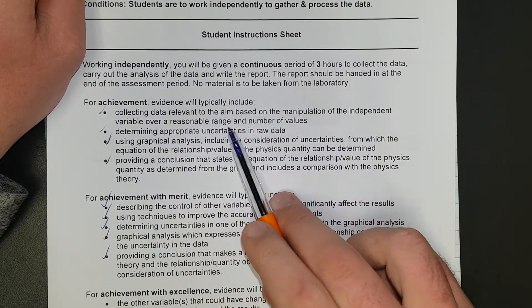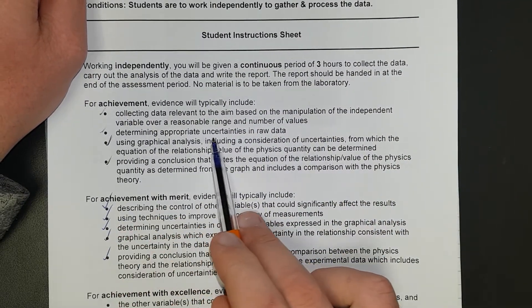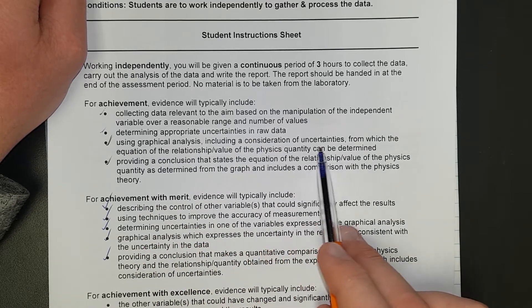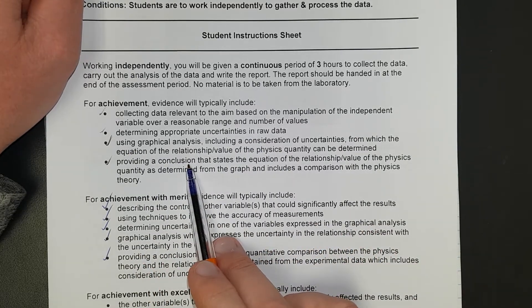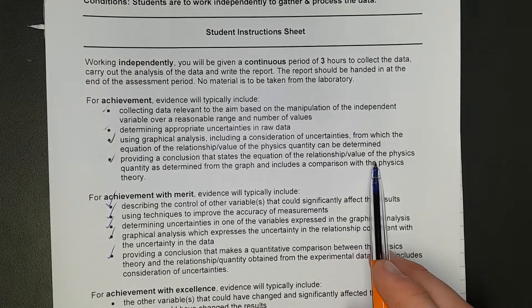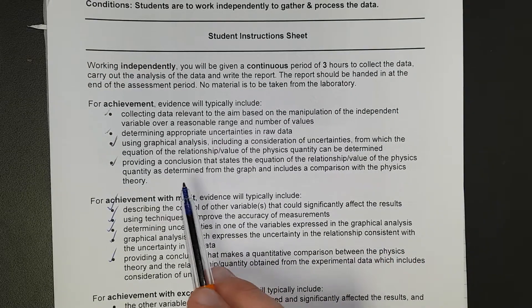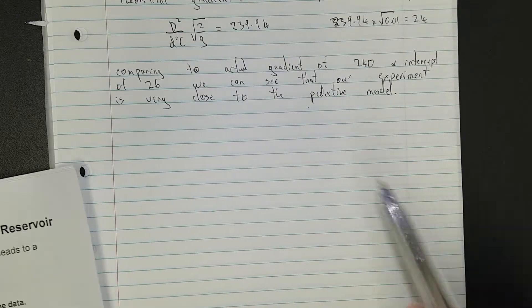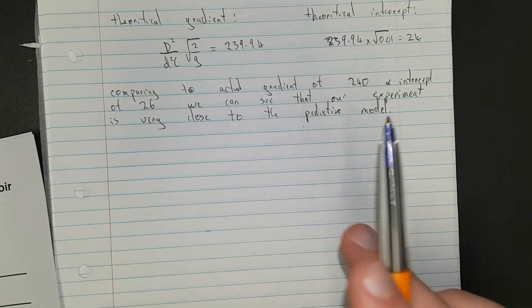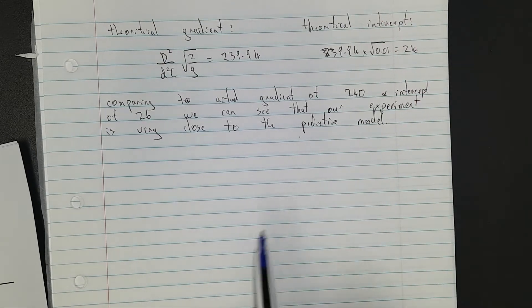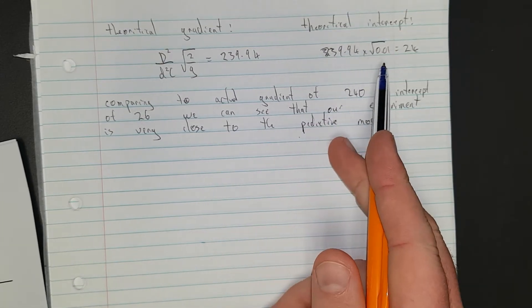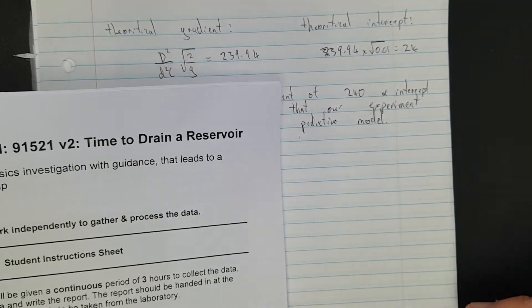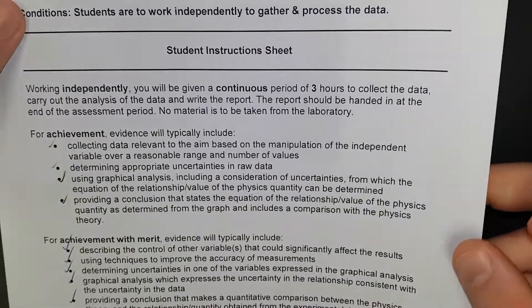I'll just go through all the things that tick off. So I've collected data relevant to the aim. I've determined the uncertainty in the raw data. We did that. Using graphical analysis including uncertainties. We did that. Provide a conclusion that states our equation of the relationship value of the physics quantity as determined from the graph and includes comparison with the physics theory. We just did that right here by comparing the theoretical gradient and the theoretical intercept to the actual gradient and the actual intercept.